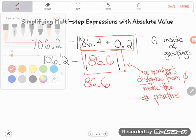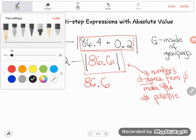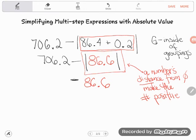Now be really careful. Again, you have to drop down everything you haven't used up. So you haven't used that subtraction yet. It was outside of the absolute value bar. So it hasn't been touched, it hasn't been affected. And of course, we haven't touched the 706.2. And we can see that my new expression is 706 and two tenths minus 86 and six tenths.